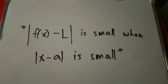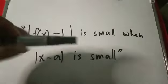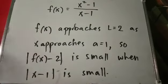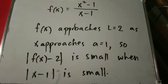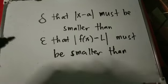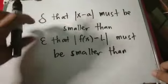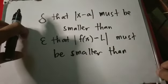When the absolute value of a minus b is small, we know we are close. So we write: the absolute value of f of x minus L is small when the absolute value of x minus a is small. Applied to our function f of x equals x squared minus 1 over x minus 1: f of x approaches L equals 2 as x approaches a equals 1, so the absolute value of f of x minus 2 is small.